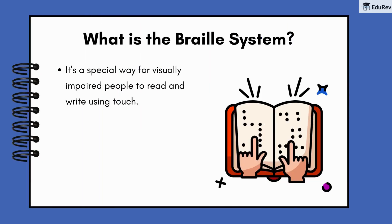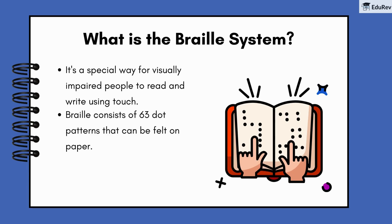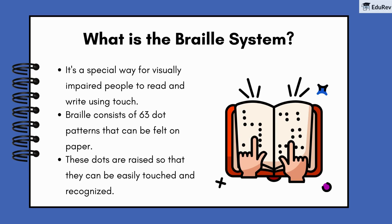The Braille system is a special way for visually impaired people to read and write using touch. Braille consists of 63 dot patterns that can be felt on paper. These dots are raised so that they can be easily touched and recognized. It's a brilliant system that enables everyone to enjoy reading and writing.